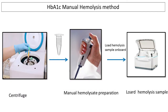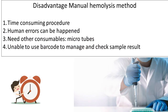For the manual hemolysis method, in biochemistry instruments that do not include the smart sampling method, we have to manually prepare the hemolysate by mixing lysis solution with red blood cells, allow some time to rupture all red blood cells and release hemoglobin, and finally load the prepared hemolysate to the analyzer as a sample to detect HbA1c results. Disadvantages include: it is a time-consuming procedure, human errors can occur, and additional consumables like microtubes are needed.